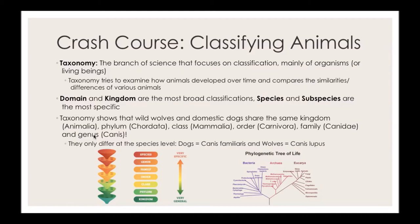Taxonomy is the branch of science that focuses on classification of organisms or living beings. It examines how animals developed over time and compares their similarities and differences. That's how we have an idea of which animals evolved into which other species and which species are related to each other.